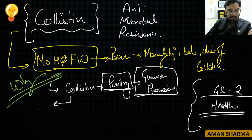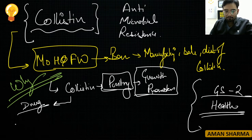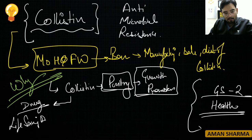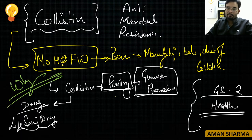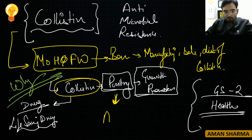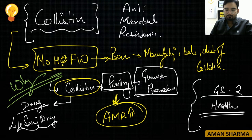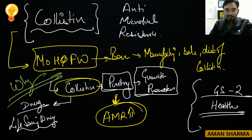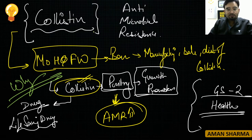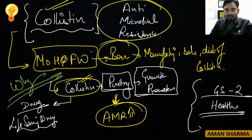Colistin is a very important life-saving antibiotic used in extreme situations. When people who eat non-veg consumed chicken or hens that had been given colistin as a growth promoter, antimicrobial resistance developed in their bodies. Colistin would enter their body in such large quantities that when it was later needed as an antibiotic, it had no effect. Moreover, colistin was being imported in large quantities from China.